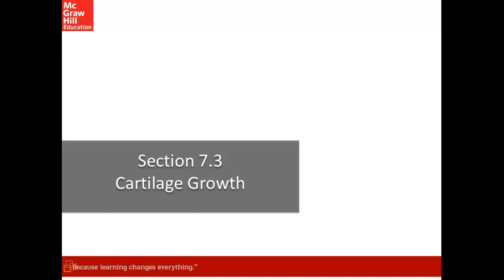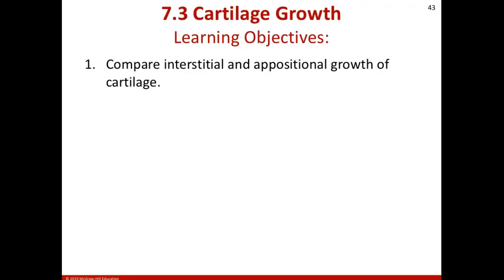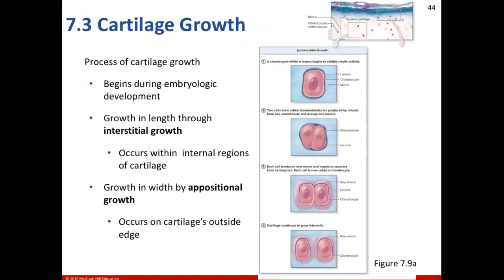That last section was really long. This is going to be a little bit of a shorter section, but make sure to understand some differentiations here. Section 7.3 is on cartilage growth, so we're going to take a step back from bone and talk about cartilage. Our process of cartilage growth is going to begin during embryonic development.